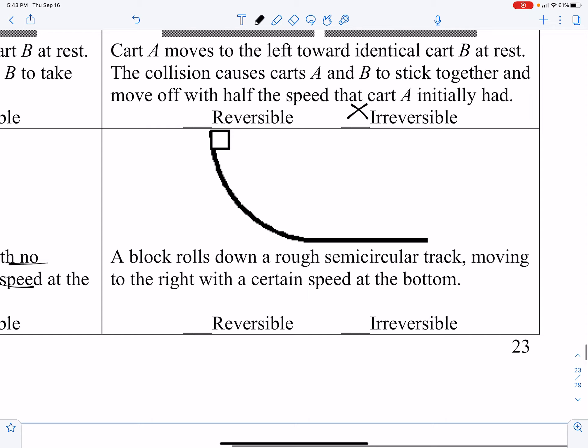However, if a block rolls down a semicircular track moving to the right with a certain speed, if it's a rough track, you're losing energy due to friction. And you're not going to be able to regain that back if you go in the opposite direction. That's an irreversible process.